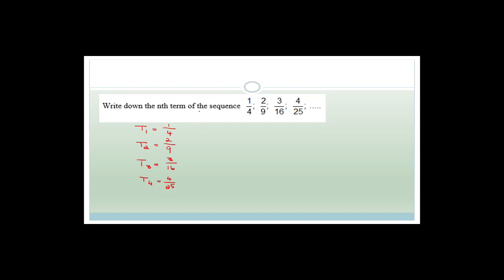Do you see that the numerator is the same as the term number? Term one has numerator one, term two has two, term three has three, term four has four. So when we're doing T(N), we know that the numerator is going to be N. Now we just need to work out what could possibly be the denominator.